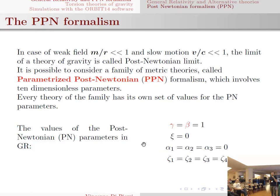The parameterized post-Newtonian formalism is a general theory that depends on 10 dimensionless parameters, and every theory of this family has its own set of values for the post-Newtonian parameters. For example, I reported the values that the parameters assume in general relativity. In this work, I consider only the parameters gamma and beta.